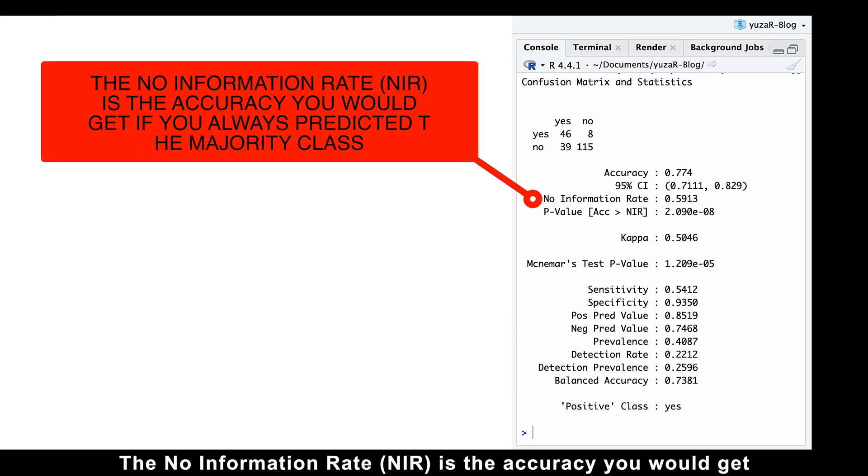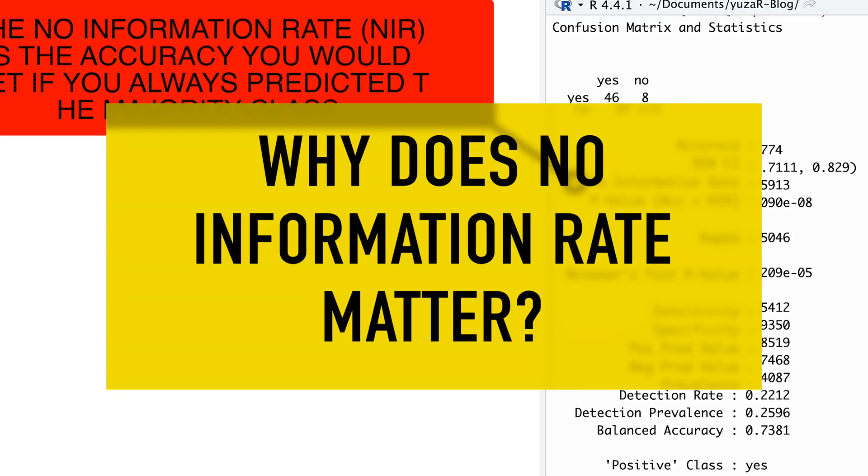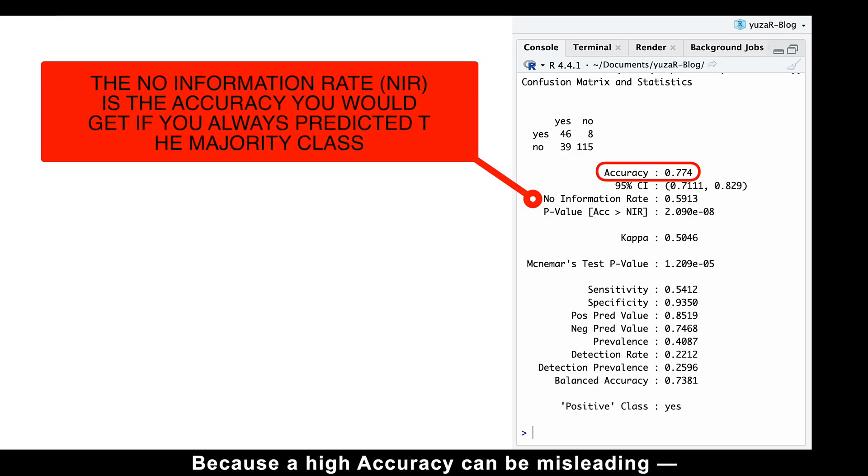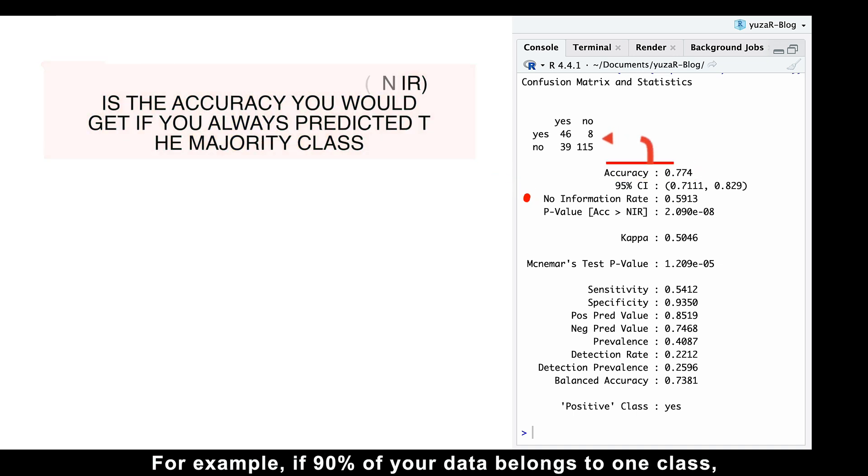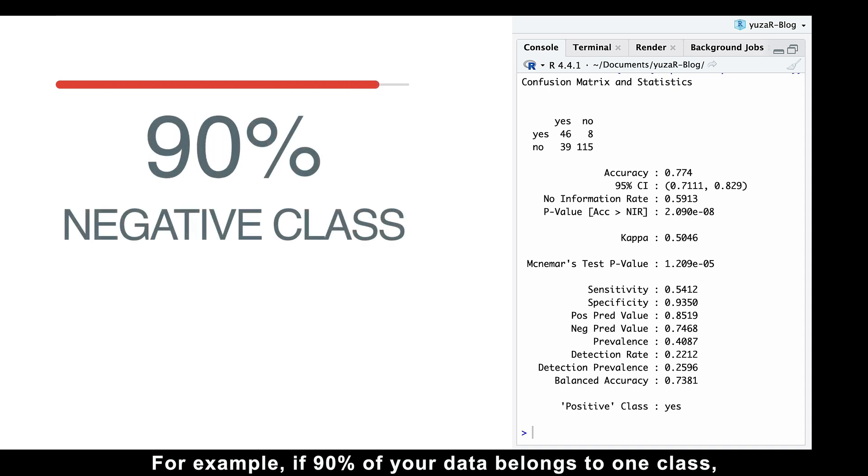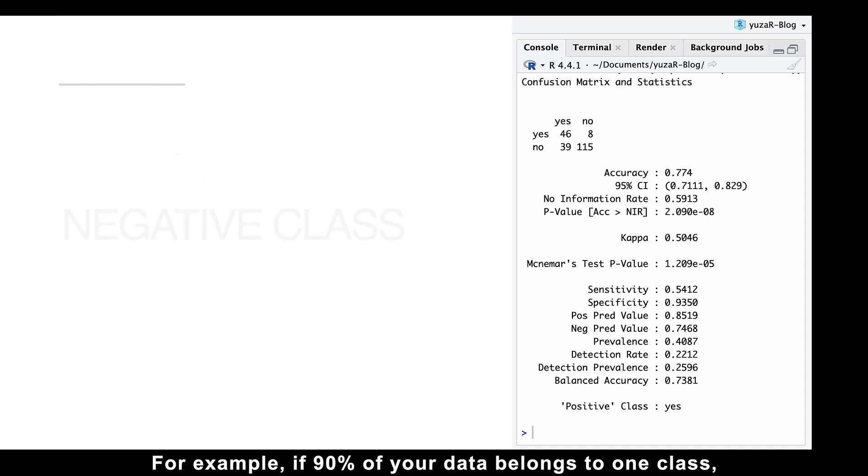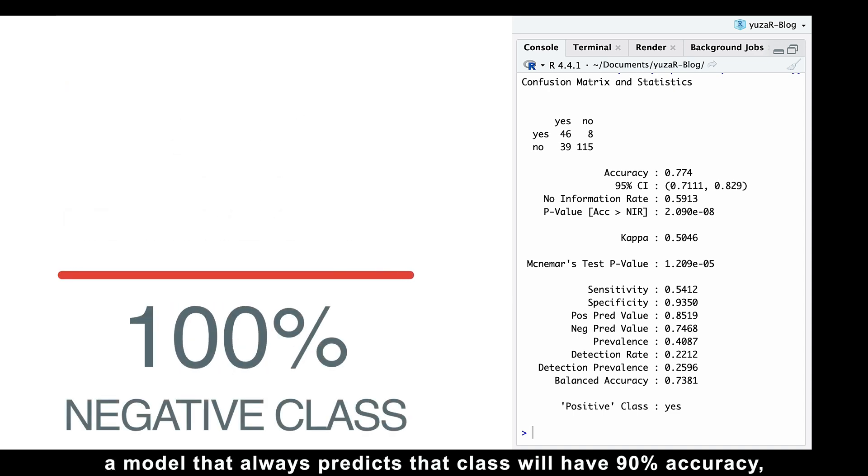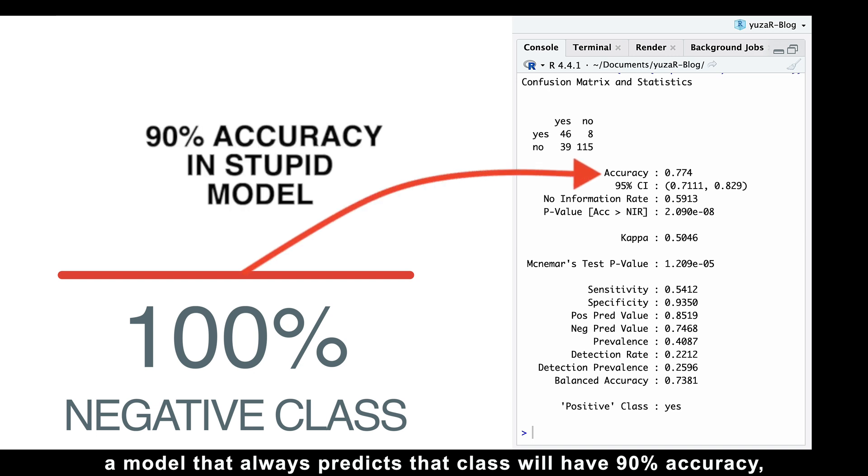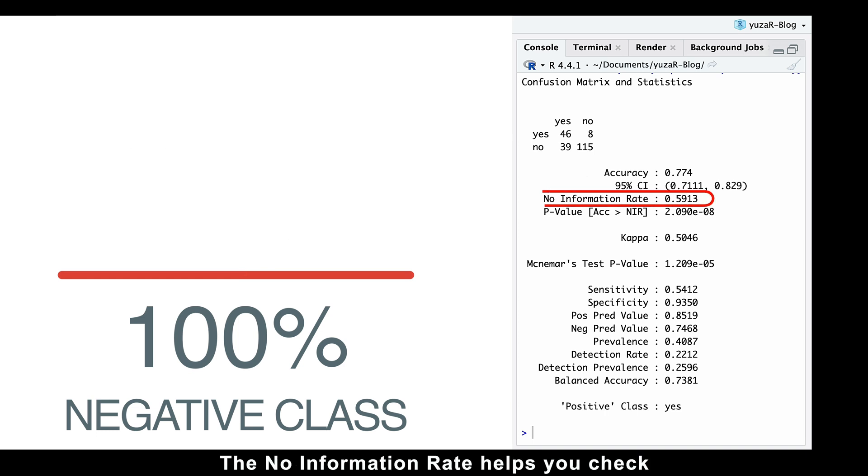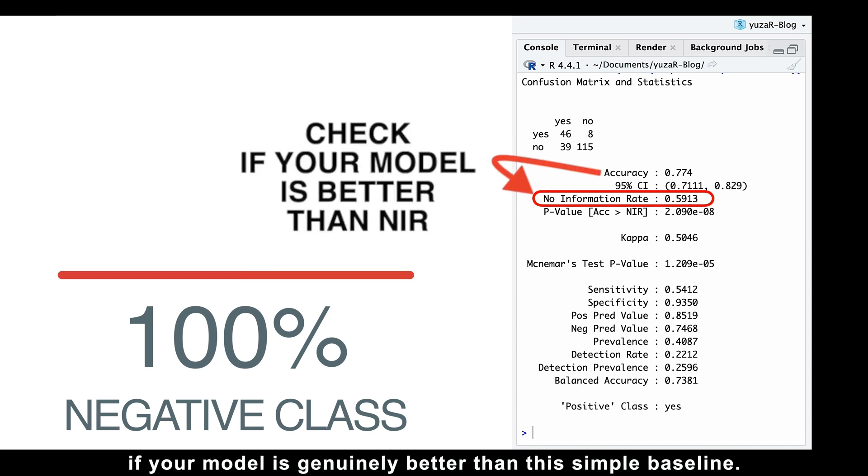The no information rate is the accuracy you would get if you always predicted the majority class. Why does no information rate matter? Because a high accuracy can be misleading, especially with imbalanced datasets. For example, if 90% of your data belongs to one class, a model that always predicts that class will have 90% accuracy, even though it's not actually smart. The no information rate helps you check if your model is genuinely better than this simple baseline.